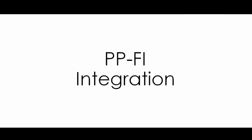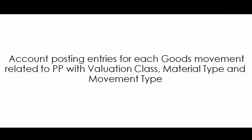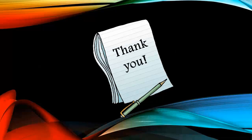Now let's talk about the integration between PP and FI. There is one main integration point: account posting entries for each goods movement related to PP, using valuation class, material type, and movement type. Whenever you do a goods receipt for a production order, accounting documents will be generated. Whether you do the goods receipt in the MM module or the PP module, accounting entries are always generated on the FI side - that is the integration point between FI and PP.